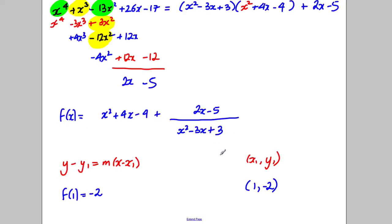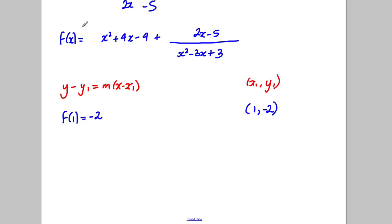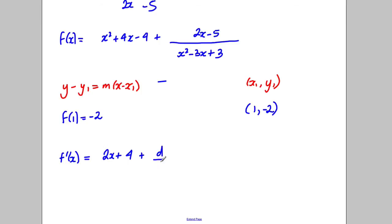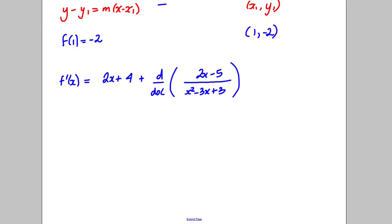Next we need the gradient of the normal, which requires the gradient of the tangent, so we work out f'(x). Differentiating x² + 4x − 4 gives 2x + 4. For the quotient term (2x − 5)/(x² − 3x + 3), we need the quotient rule — I'll do that working separately.